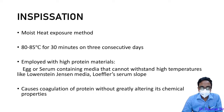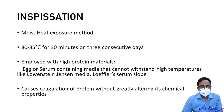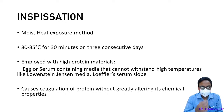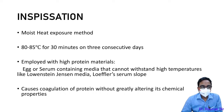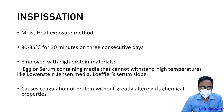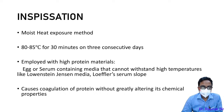Inspissation is a moist heat exposure method. We use temperatures below 100°C — that is 80 to 85°C for 30 minutes for three consecutive days. On the first day you kill all vegetative forms and allow the spores to germinate. The next day the germinated spores are killed by the same process. This continues for three days, after which most of the spores have germinated and their corresponding vegetative bodies have been destroyed.